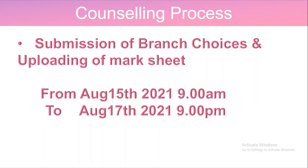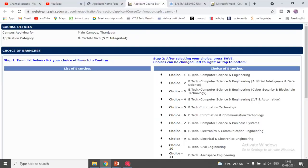The dates for submission of branch choices start from August 15th until August 17th at 9 o'clock night. Once you log in with your application login ID and credentials, on the left hand side you can see the branch choice selection option.